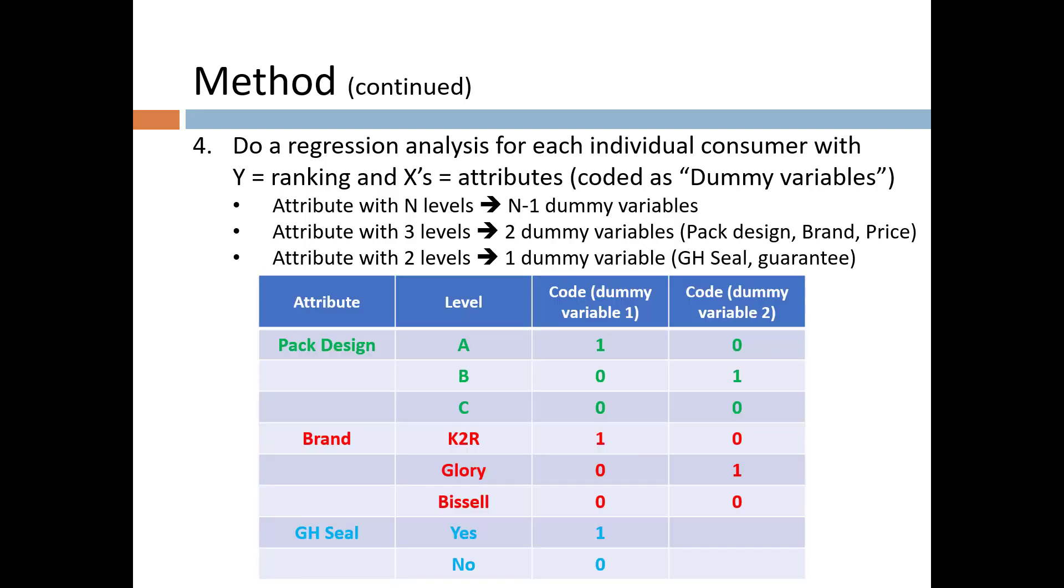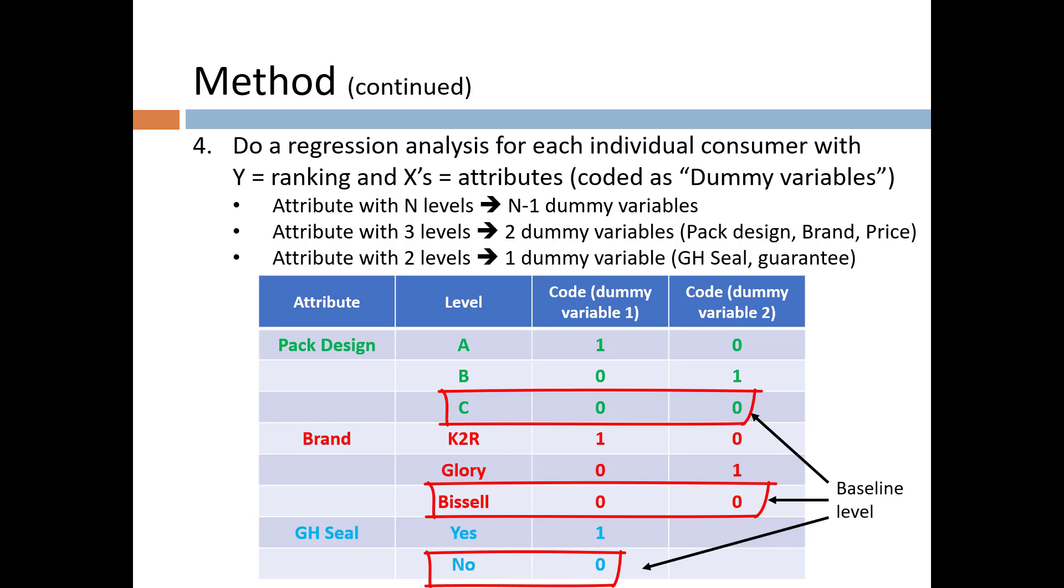This table shows three of the attributes and their levels. There are two dummy variables for the first two attributes and one for the third attribute. Each is coded 0 or 1. Attribute levels with all zeros, for example, pack design C, brand Bissell, and no seal, are called baseline levels. When we run the regression, the utilities for the levels are interpreted relative to the baseline level.